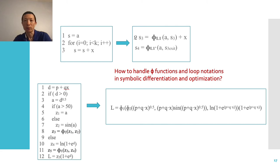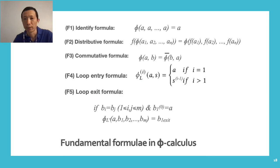Now with phi notations, we get these symbolic representations for these two examples. But they still contain phi functions and loop notations. How to handle these notations in symbolic differentiation and optimization? The formulae in our phi calculus give the answer.